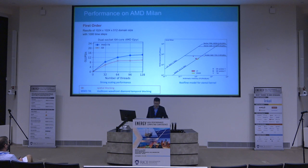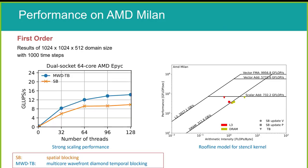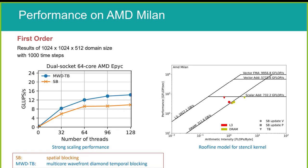We get similar conclusions for the first order formulation on AMD Milan. MWTB achieves 14 giga stencils per second while spatial blocking reaches only 10, meaning temporal blocking delivers 40% more performance than spatial blocking.